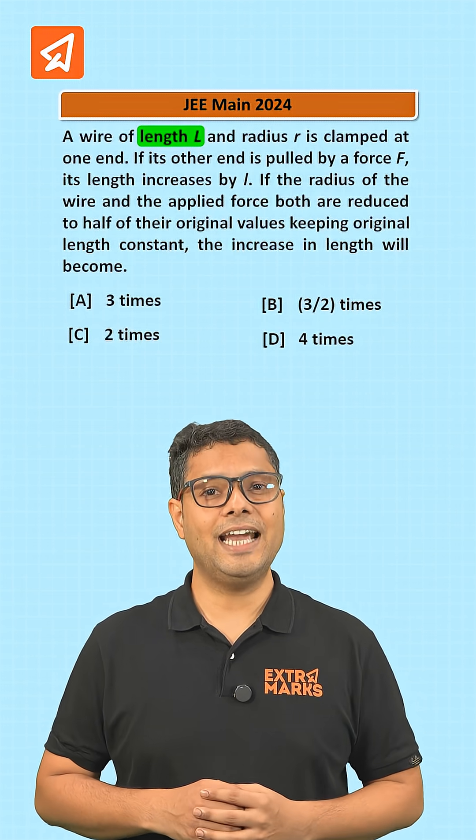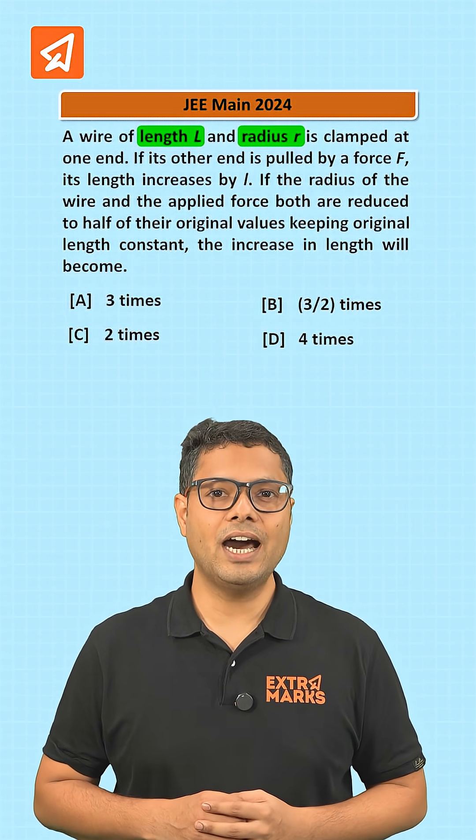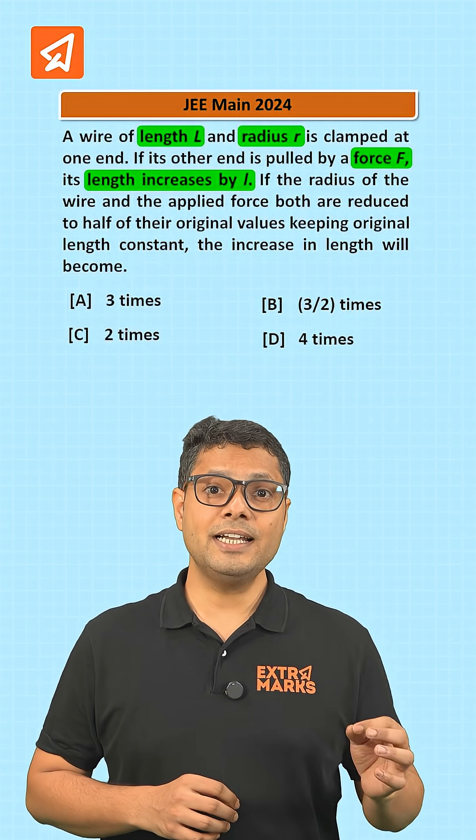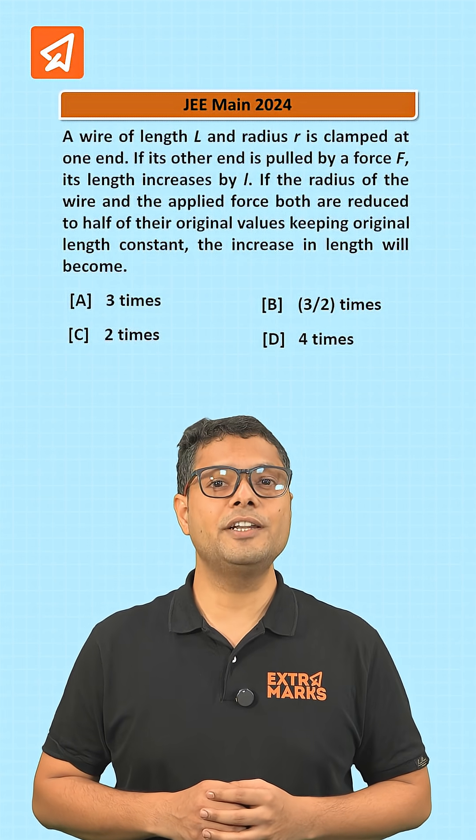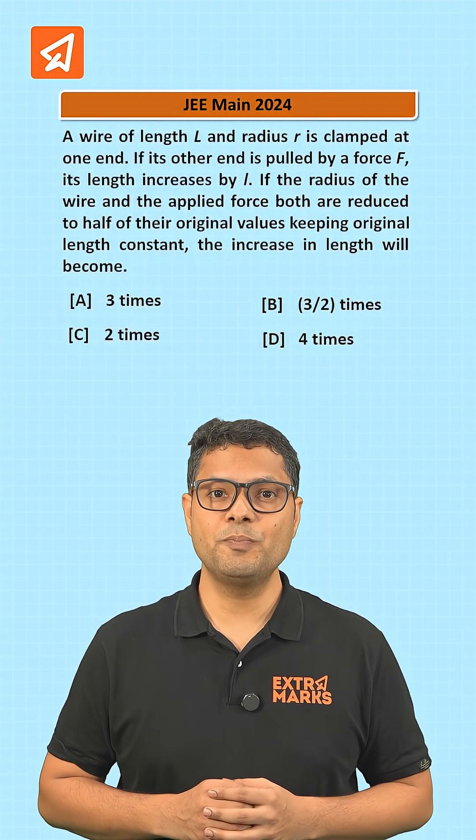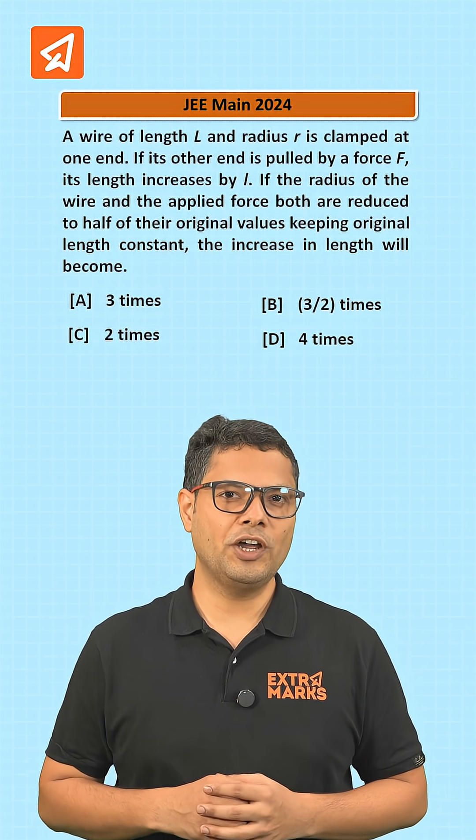When a wire of length L and cross-sectional radius R is pulled by force F, its length increases by delta L. If the radius and applied force both are reduced to half, keeping the length same, then how much times will the length increase?